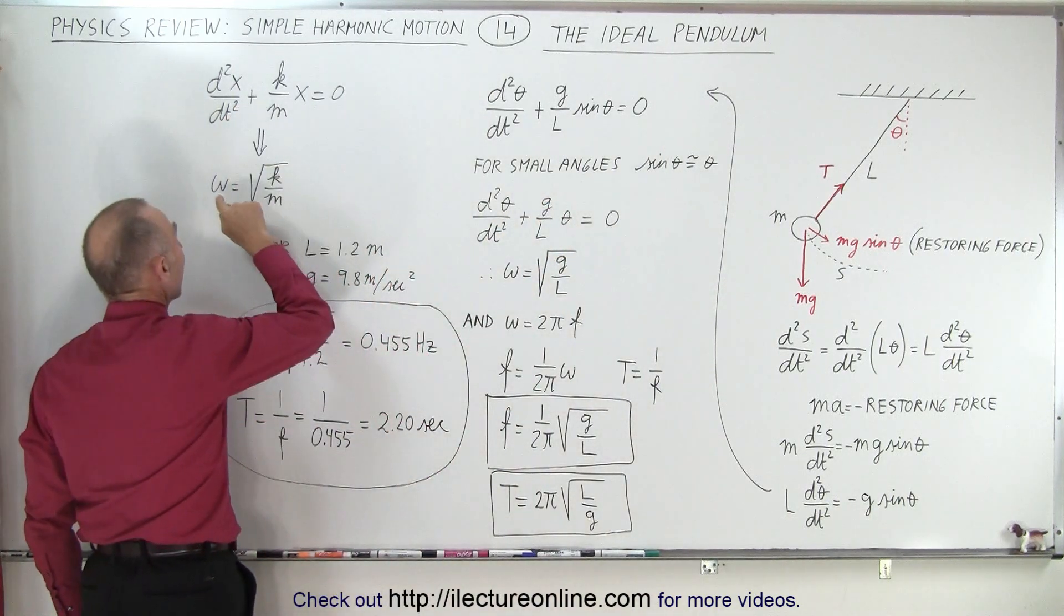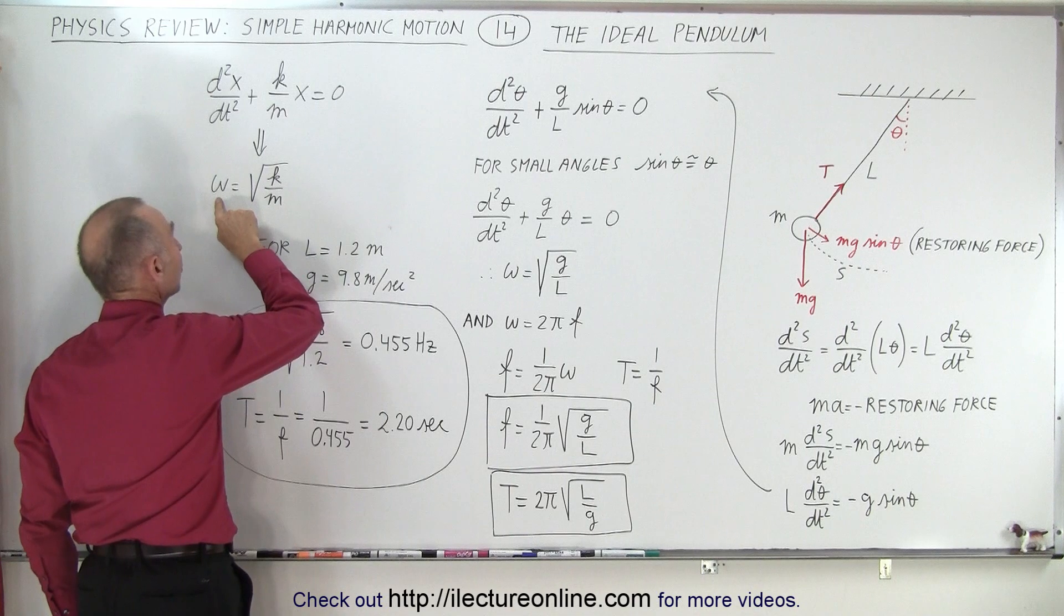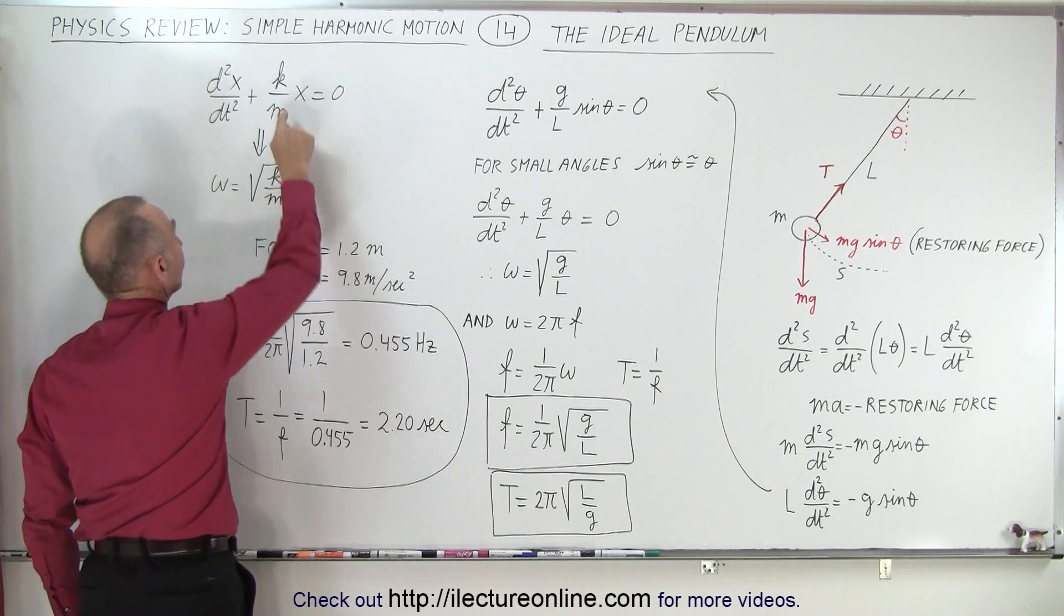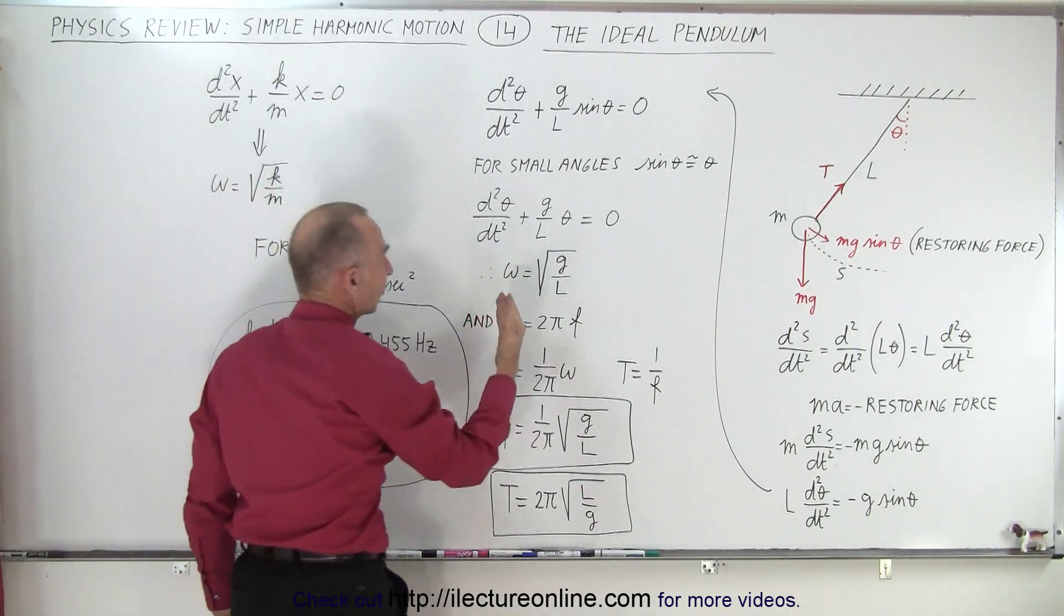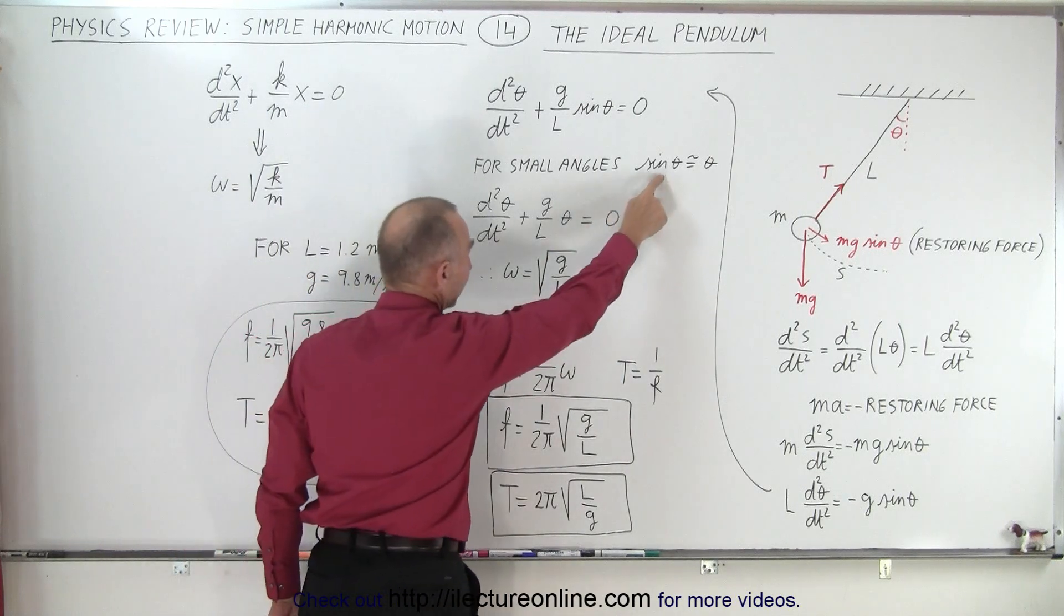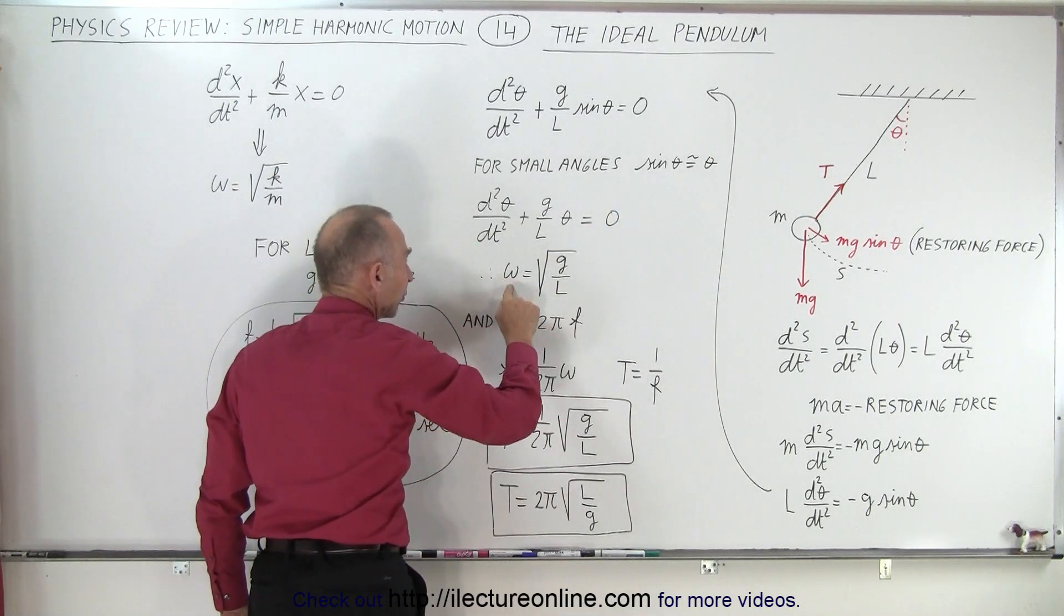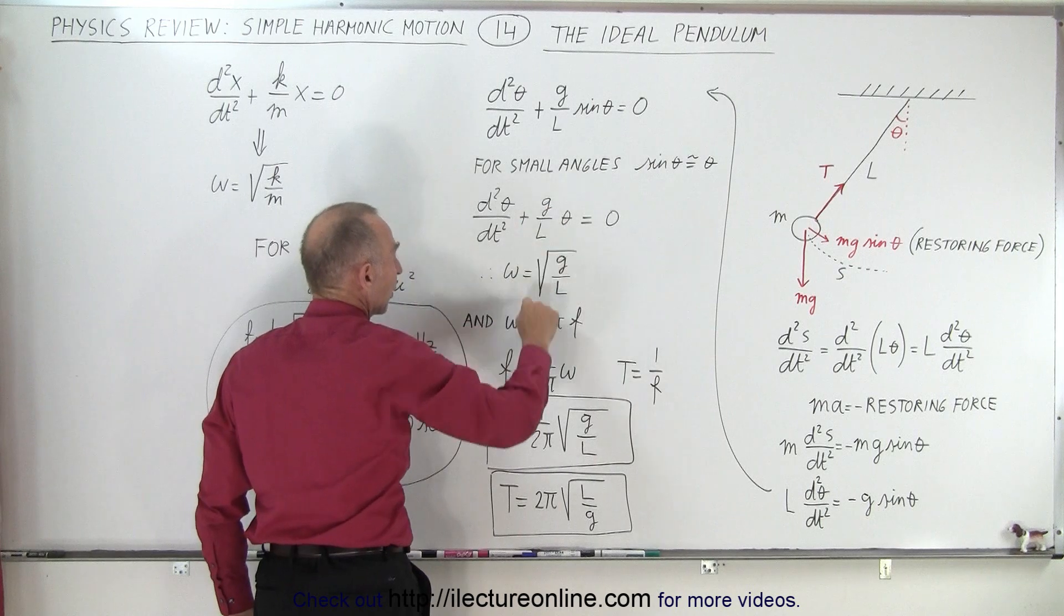So now you can see that the angular frequency of oscillation, which is the square root of k over m, which is the square root of this term right here, that would be exactly the same for a pendulum. Again, as long as we have small angles, the angular frequency of the pendulum is equal to the square root of g over L.